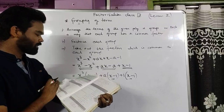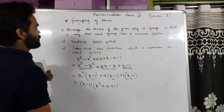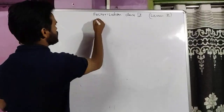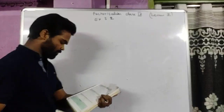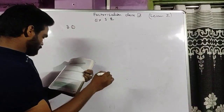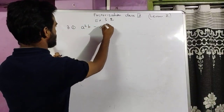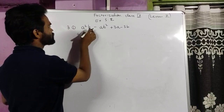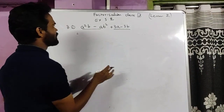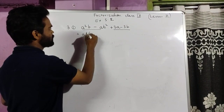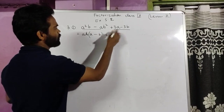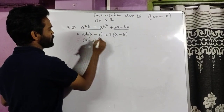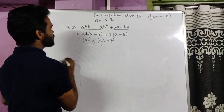We'll now directly move to the sums of exercise 5.2, where all sums are based on grouping of terms. Sum 3 part 1: a²b minus ab² plus 3a minus 3b. The grouping is already done. Taking ab common from the first two: ab(a minus b). Taking 3 common from the last two: 3(a minus b). Now taking (a minus b) common, ab is left from the first group and 3 from the second. So it is factorized as (a minus b)(ab plus 3).